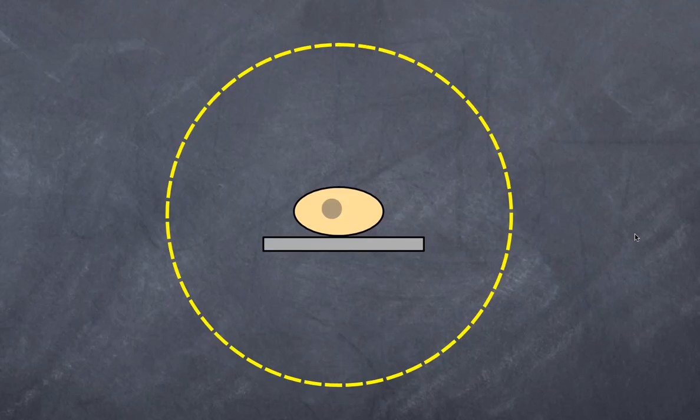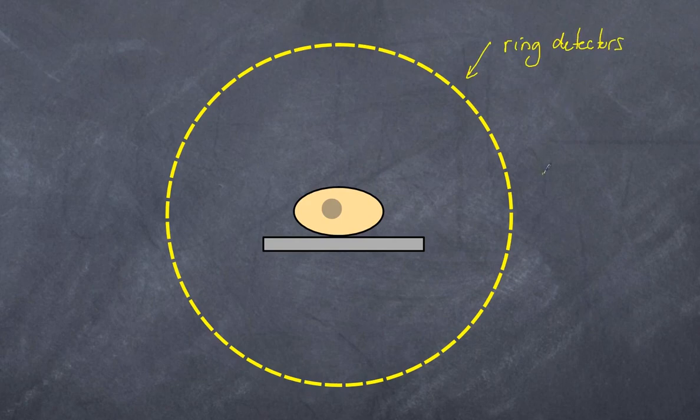Here I have a simple diagram to represent what happens when a person gets a scan. I have a ring of detectors—these are gamma detectors. Over here I've got a body, and in this section I have something that releases positrons, where there is a high rate of glucose uptake. This is the area that is releasing gamma radiation.